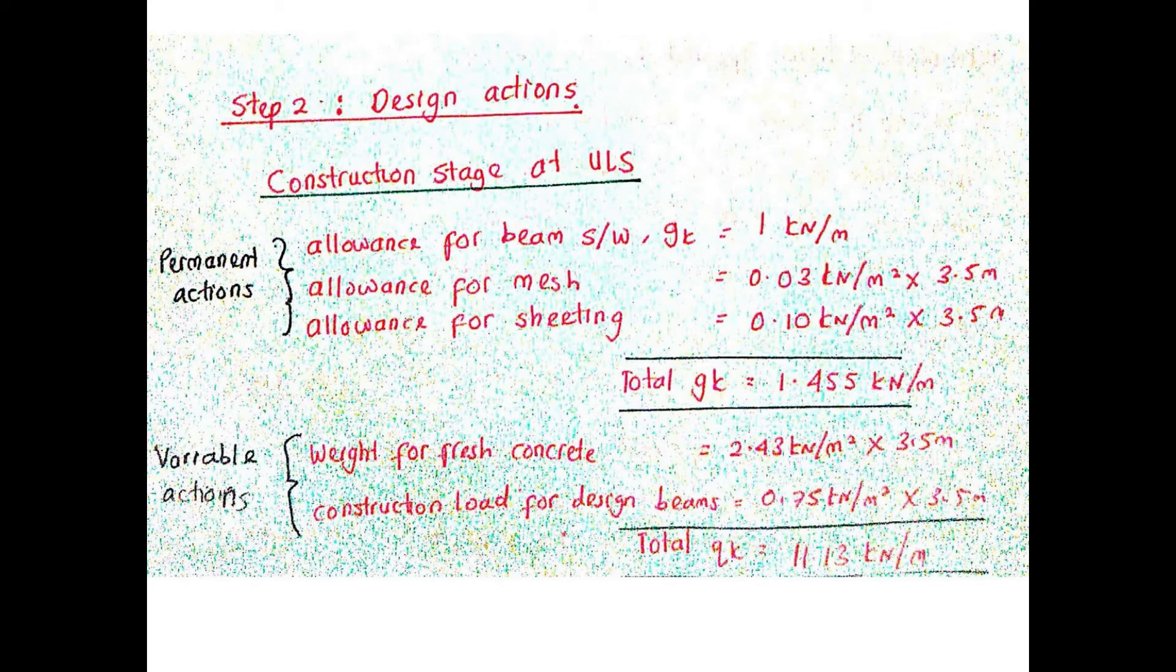Let's first calculate the design at construction stage for permanent and variable actions. The total permanent and variable actions are 1.455 kN/m and 11.13 kN/m respectively.